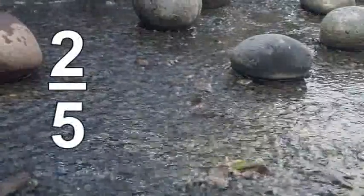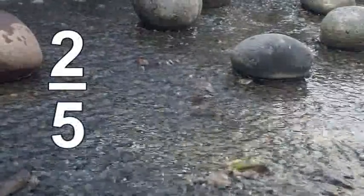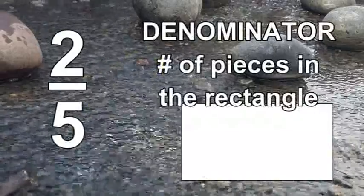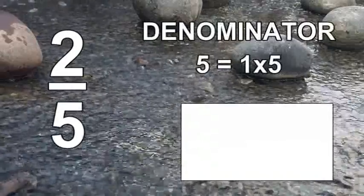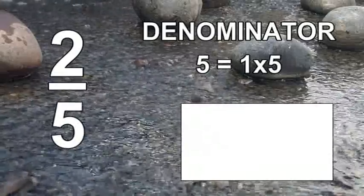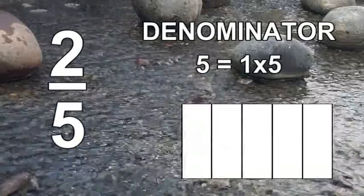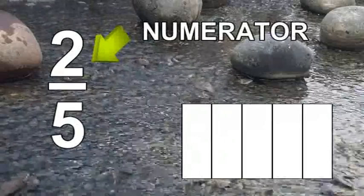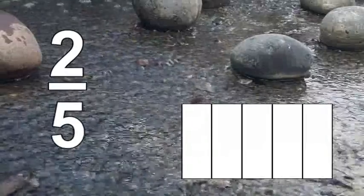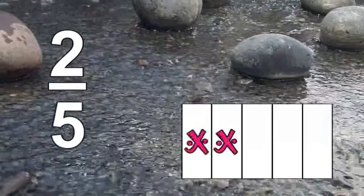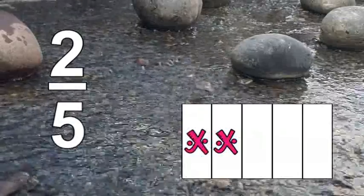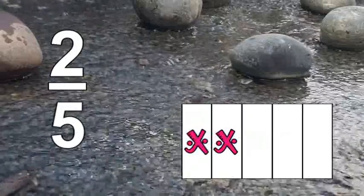Now let's model two over five. Remember, you want to start by looking at the denominator — it tells you how many pieces there will be in your cake. Since the denominator is five and five is a prime number, its only factors are one times five. That means you'll slice up your cake into five vertical columns. The numerator is two, so two of the five pieces will be X'd. By modeling two over five, you can easily see that less than half of the cake is X'd — therefore, two-fifths is less than one half.